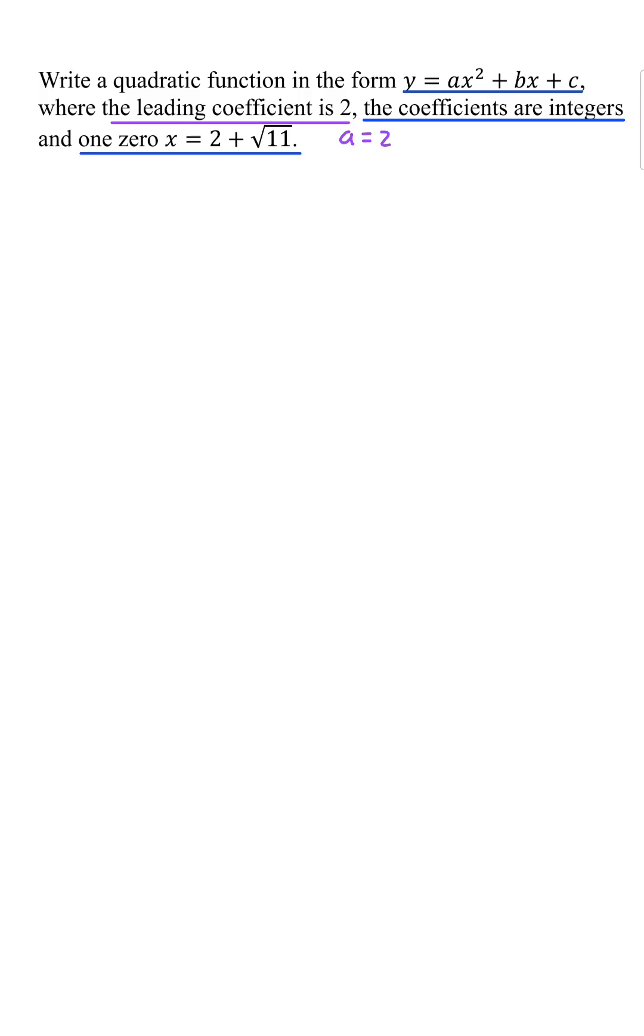Since we have a quadratic function, there should be two zeros, but we only see one. But since we know the coefficients are integers, and one zero is x equals 2 plus square root 11, then we should also have another zero at x equals 2 minus square root 11, which is the conjugate.